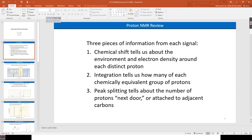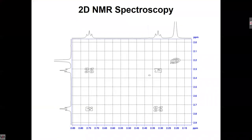Peak splitting is really the key when it comes to 2D NMR. The reason it occurs is because those protons that are close enough chemically can interact with the energies, and you wind up with a couple different energy levels for these nucleons. You could have them spin up — coherent, all their spin pointing in the same direction — or you could have them incoherent, meaning they're pointing opposite spins. That's a different energy level, and that's what creates peak splitting.